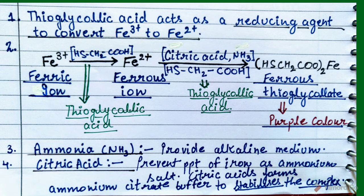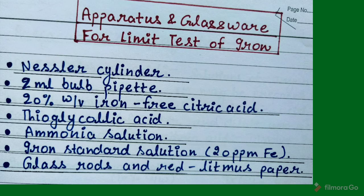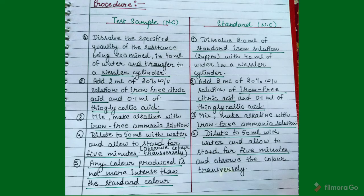The other role of citric acid is forming an ammonium citrate buffer, which stabilizes the ferrous thioglycolate complex. The apparatus and glassware required for the limit test of iron include: two nessler cylinders for preparation of the test solution and the standard solution, a 2 ml bulb pipette, 20% weight by volume iron-free citric acid solution, thioglycolic acid, ammonia solution, iron standard solution at 20 ppm, a glass rod, and red litmus paper.